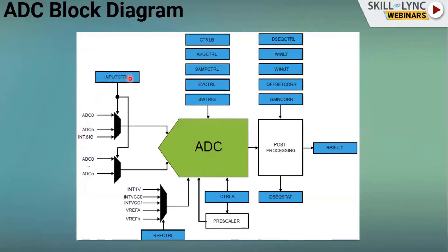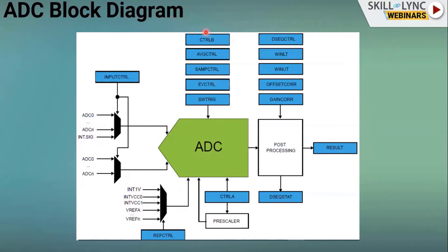Looking at the block diagram: the input controller register selects the required input channel, since the ADC can have several inputs. The reference controller register configures the reference voltage — the maximum voltage beyond which the ADC cannot measure. For example, with a 2.5V reference, input voltage cannot exceed 2.5V. Internal reference voltage options like 2.5V or 3.3V are available.